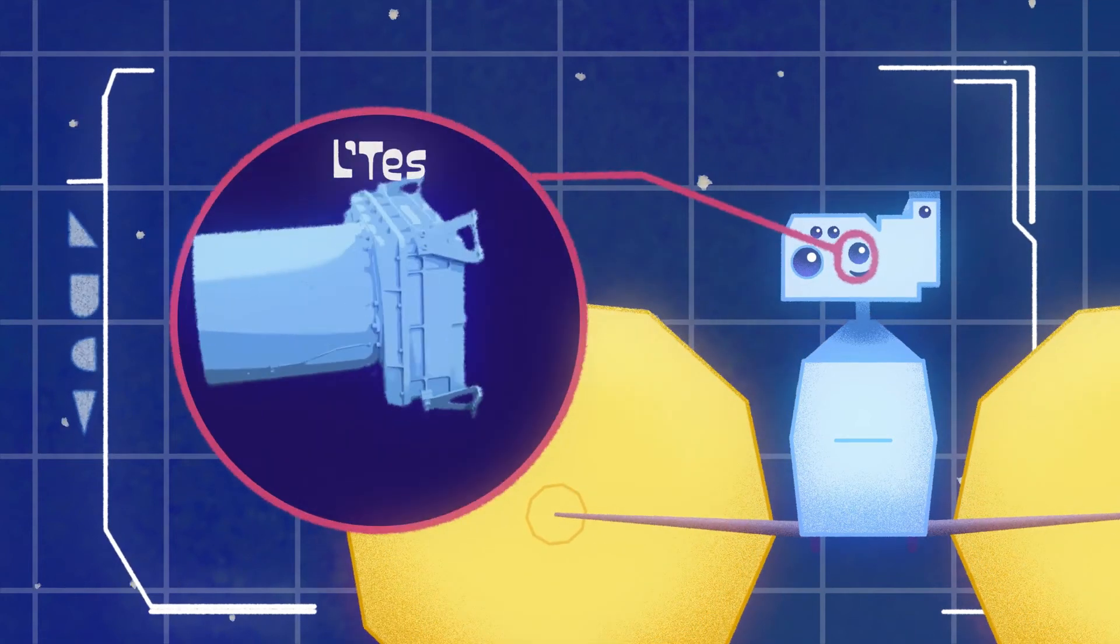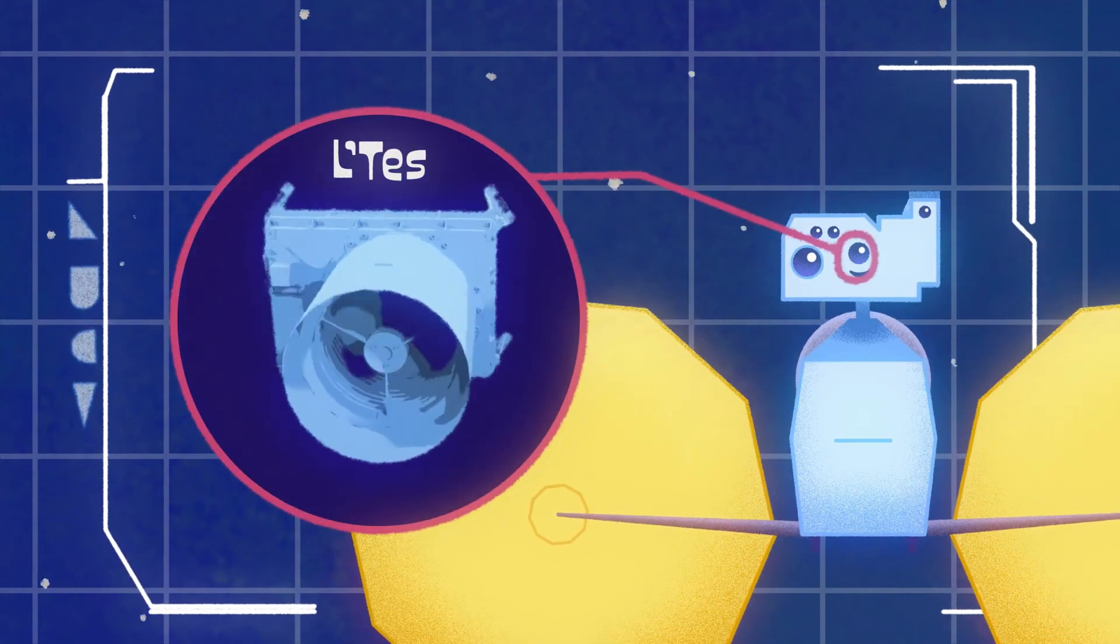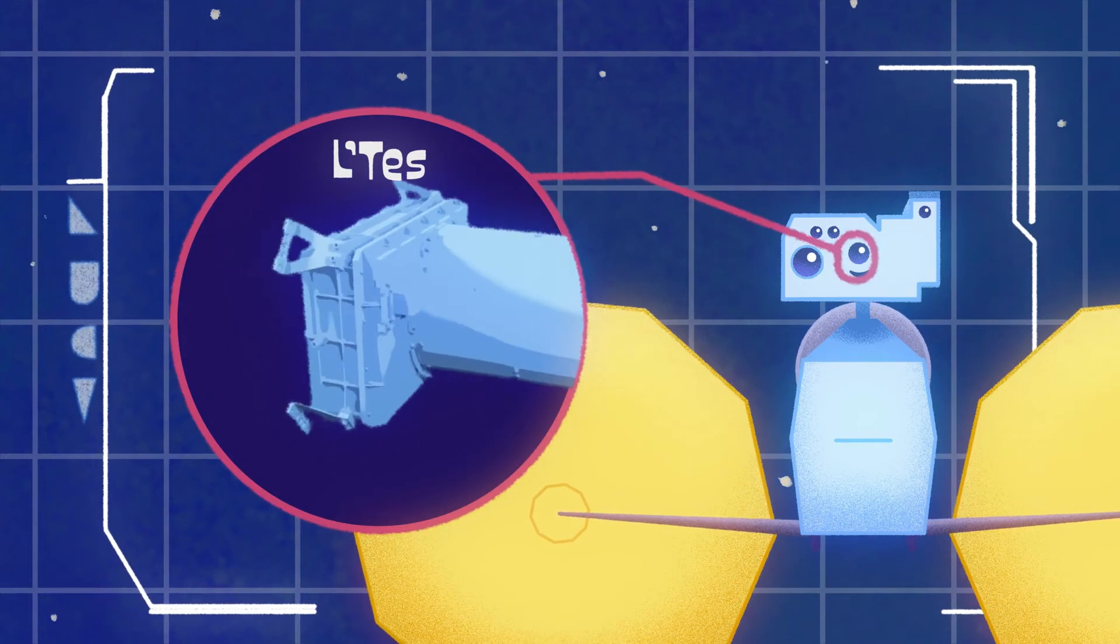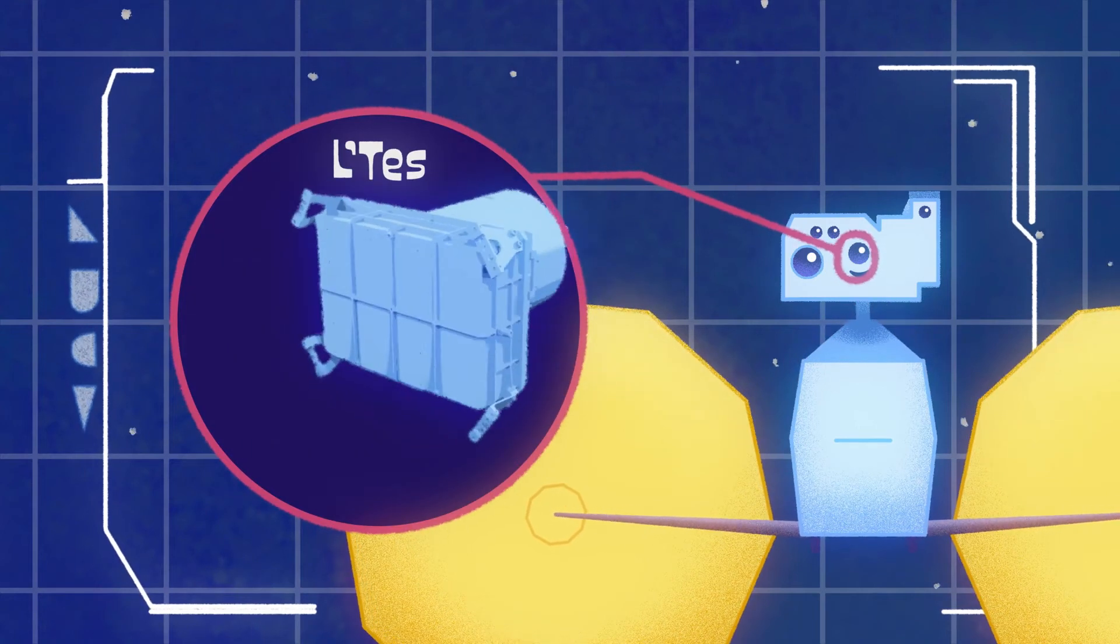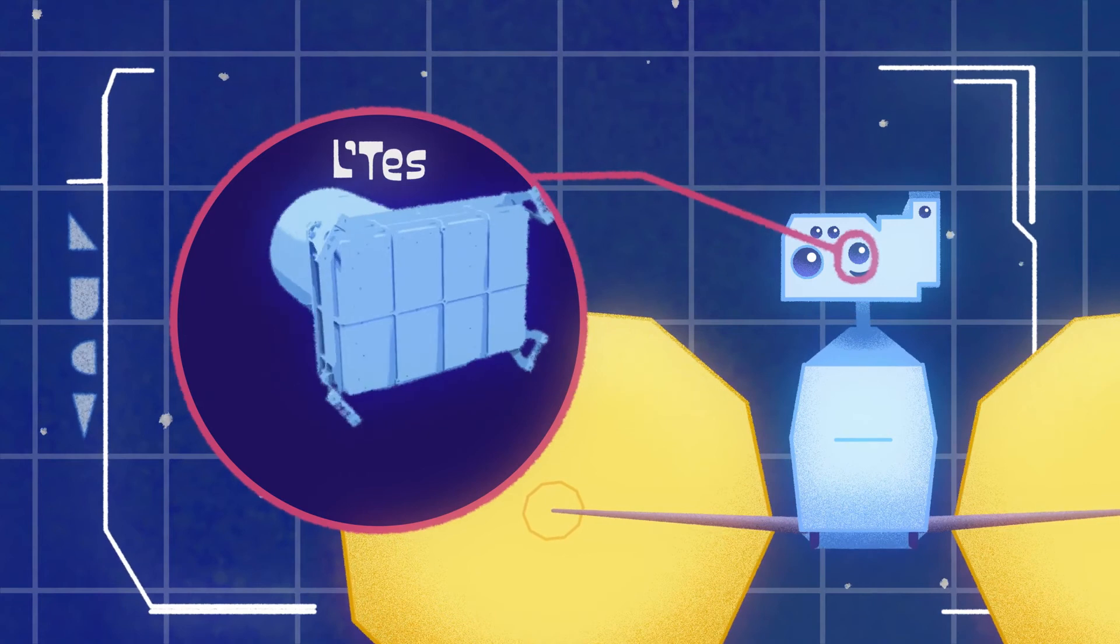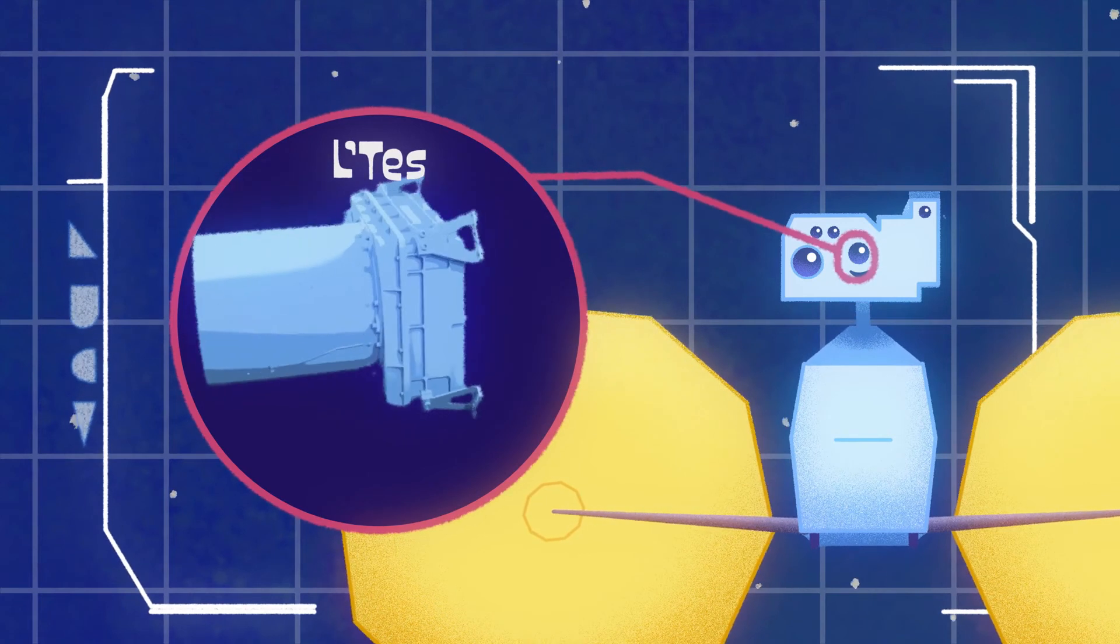This is LeTess, the thermal emission spectrometer, basically a touchless thermometer. It will measure the temperatures on the Trojan asteroid's surfaces to tell scientists whether the surfaces are rocky or dusty.